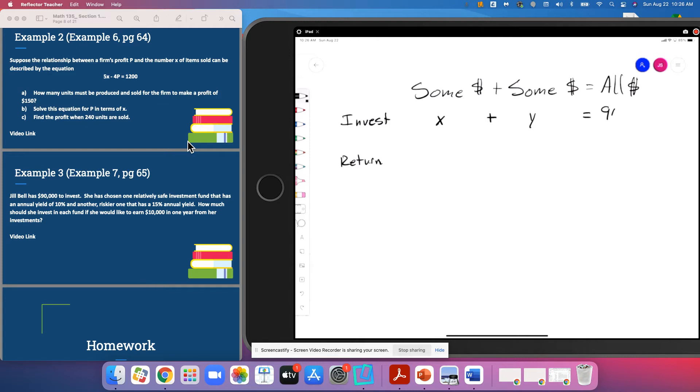In terms of her return, one account is going to give her a 10% return, the other a 15% return. So this is going to be 0.10x from the first fund, and 0.15y from the second fund, and altogether she wants to get $10,000 back.